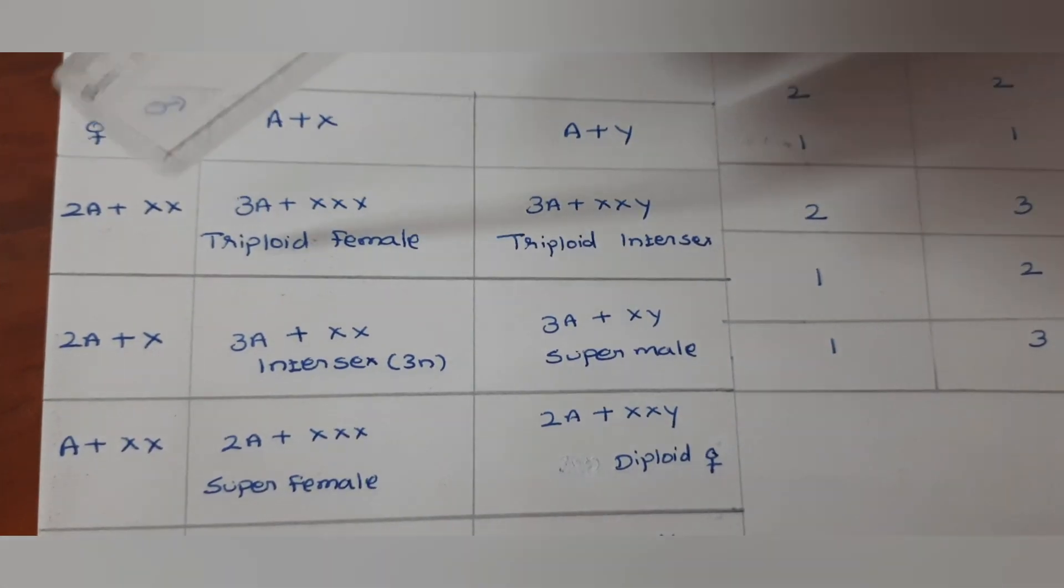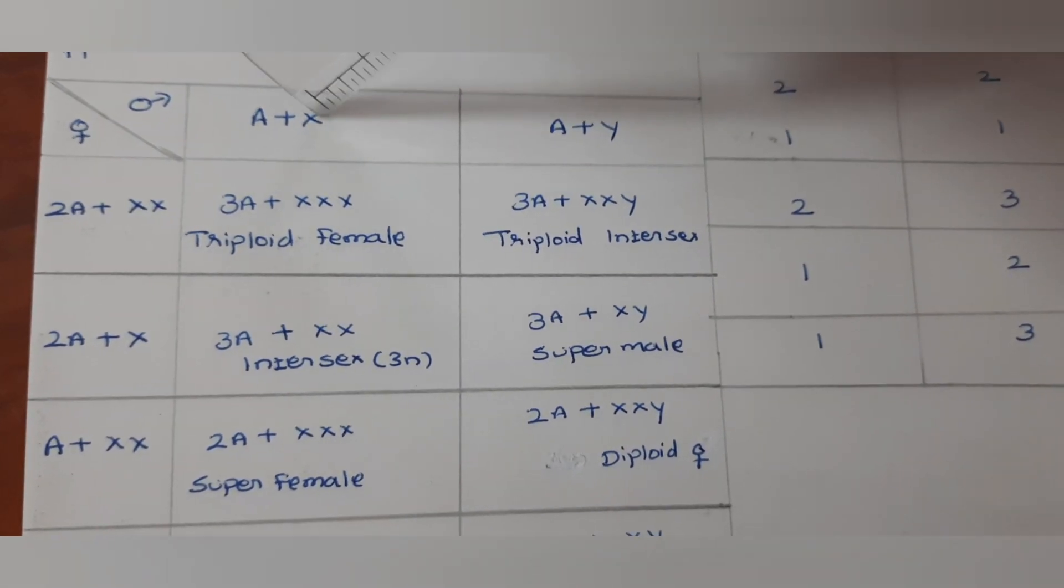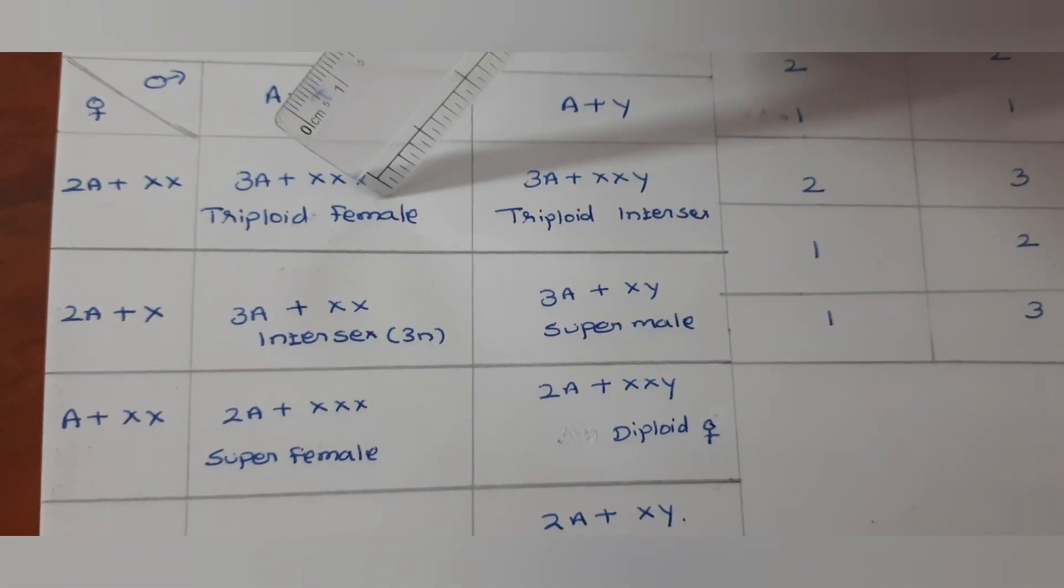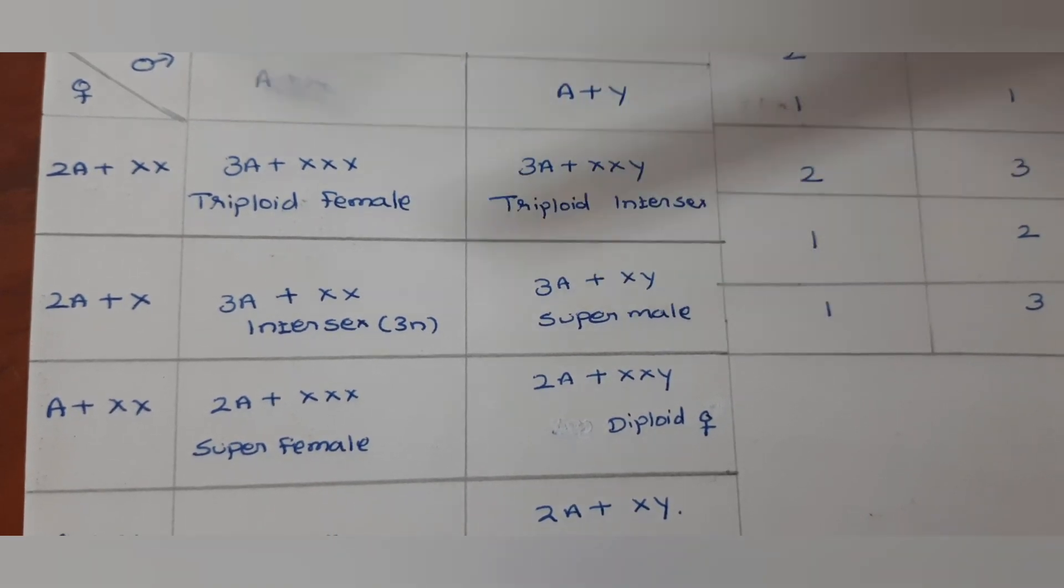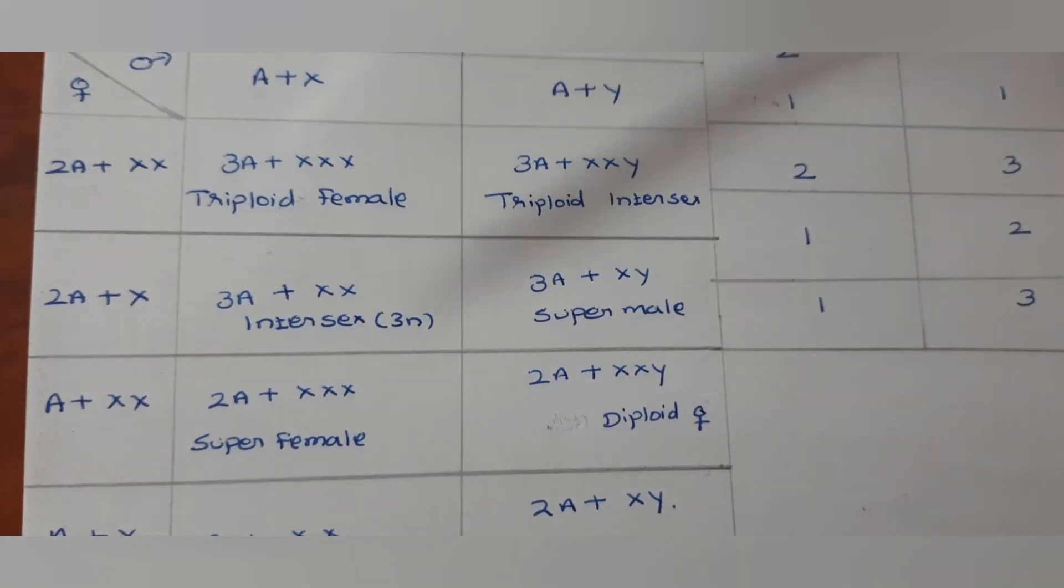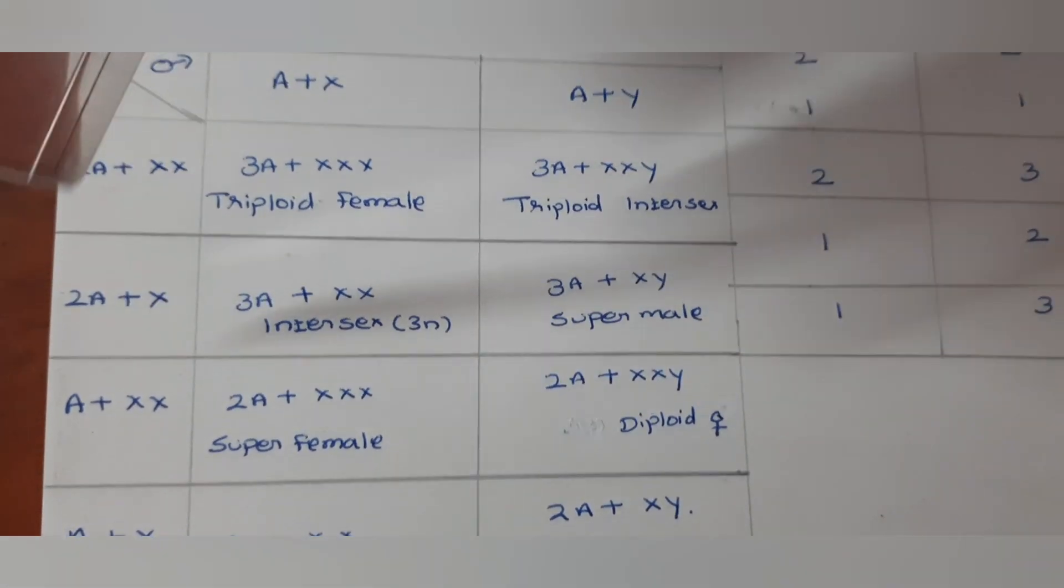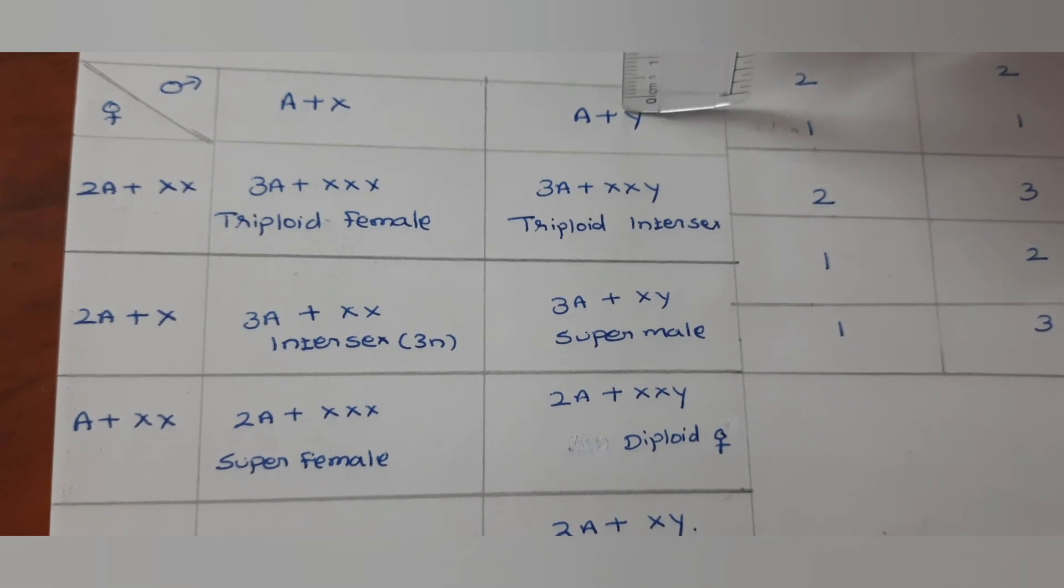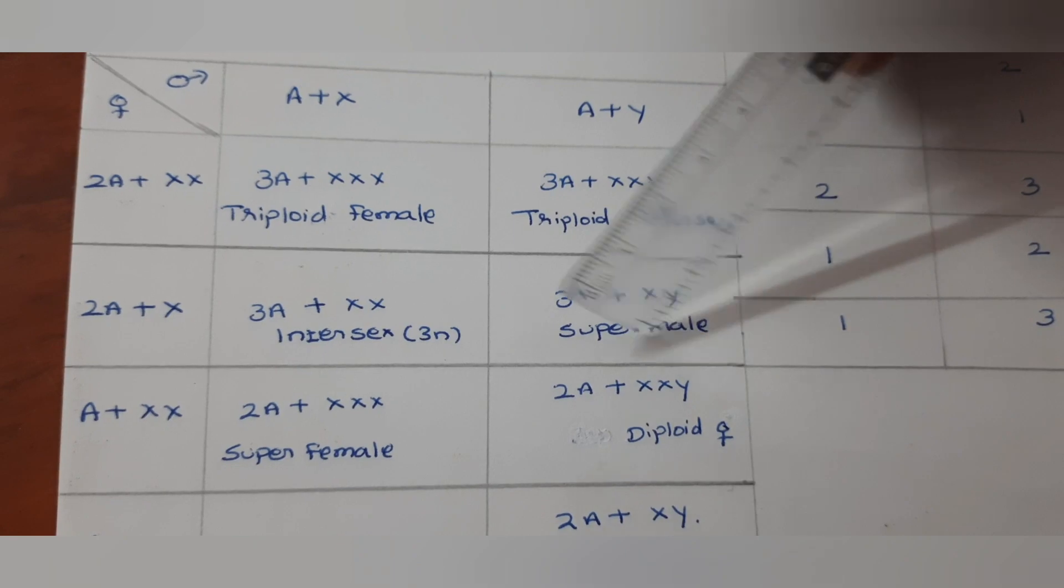Now when you cross multiply this to this: 2A+XX into A+X gives 3A+XXX. In such a way triploid female forms. 3A+XXY means triploid intersex. 2A+XX, 2A+XX. In the same way when you multiply this one to this one: 2A+X into A+X, 2A+X into A+Y. You can see 3A+XX intersex, 3A+XY super male.